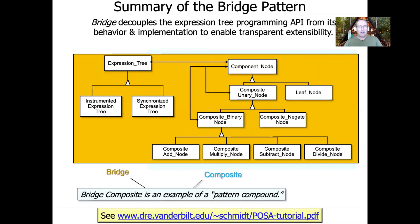To summarize the bridge pattern: it decouples the expression tree programming API from its behavior and implementation in order to make it possible to extend capabilities transparently — meaning we don't break client code when we make changes. The combination of bridge with composite is known as a pattern compound, and we'll talk about pattern compounds later. A pattern compound exists when two patterns occur together frequently enough that we refer to them as, say, a bridge-composite or a batch-iterator. These are examples of what are known as the relationships between patterns, a topic we'll cover if we have time at the end of the course.